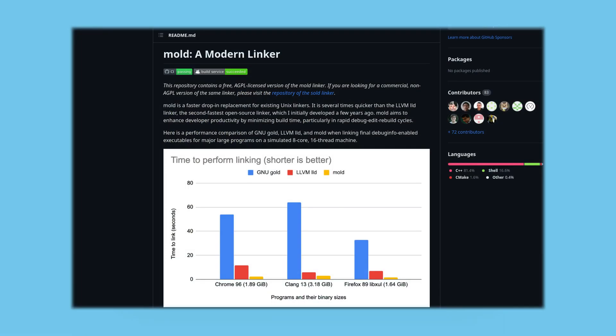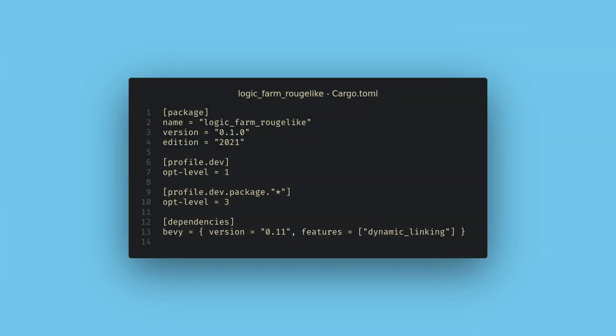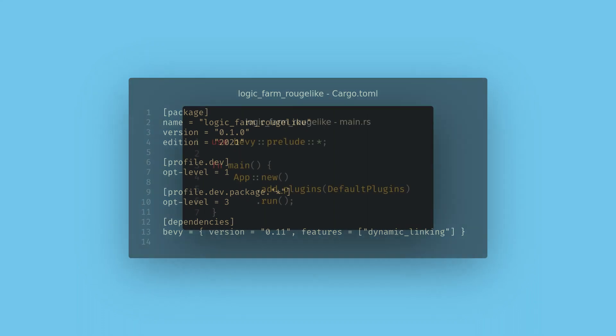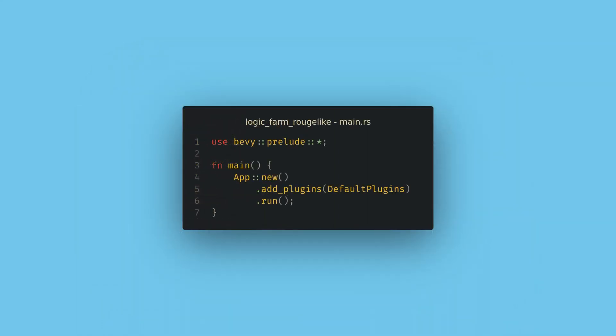Finally, if you're on Linux, I recommend the Mold linker, which greatly speeds up compile times. With all of this, I often get under two seconds from saving a file to the game running on my machine. Now in main.rs we're ready to start using Bevy.